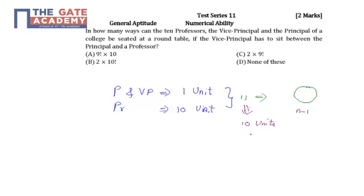So the total possible arrangement over here is 10 factorial.